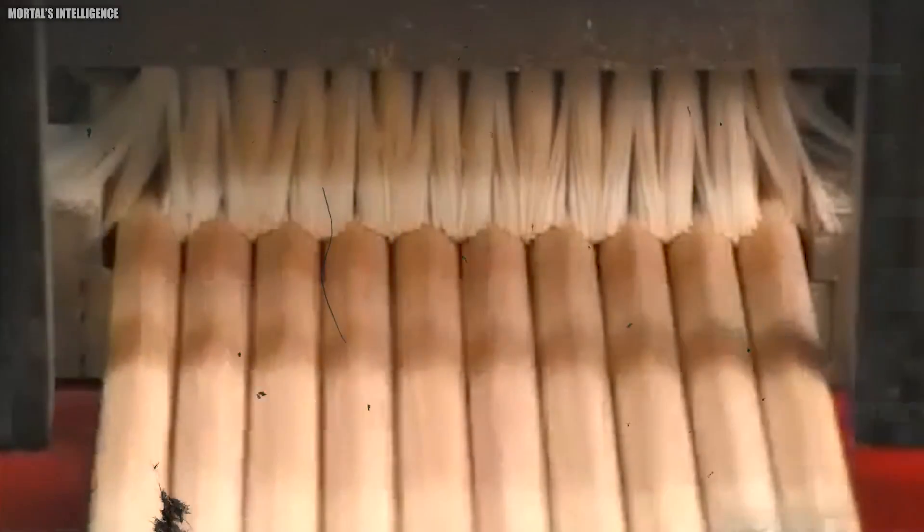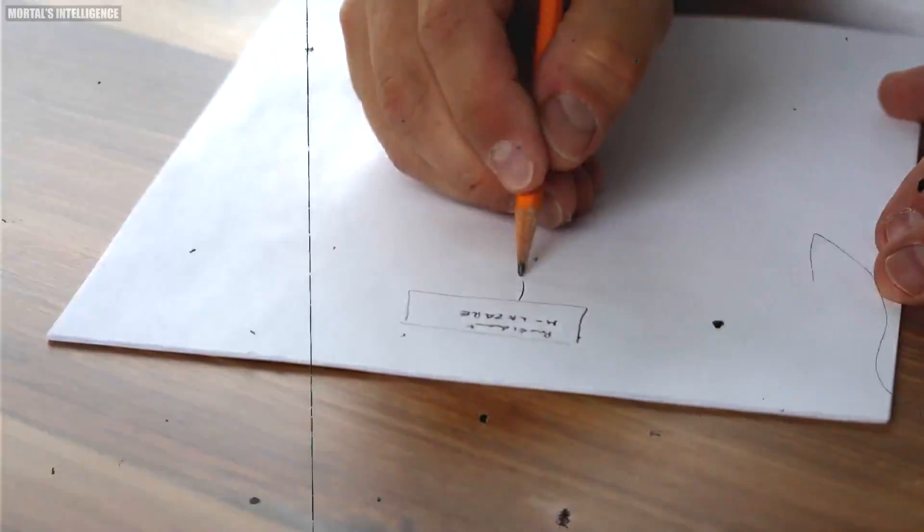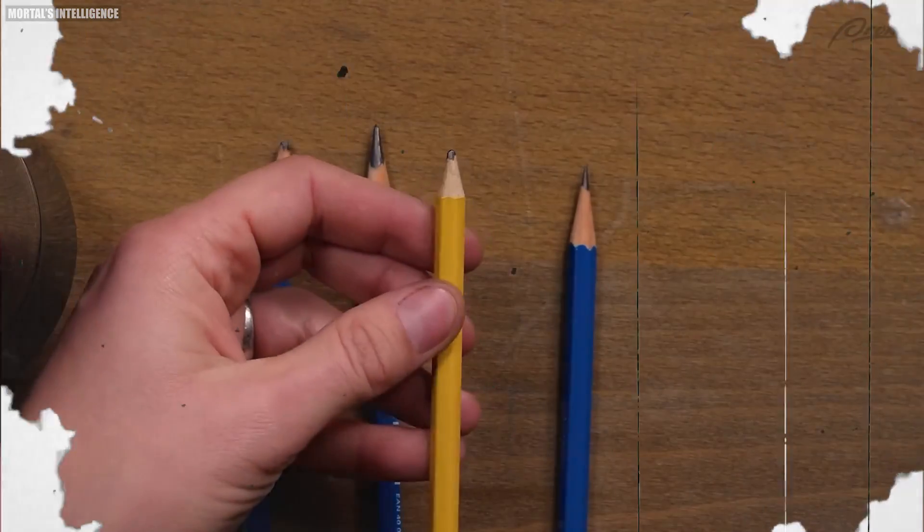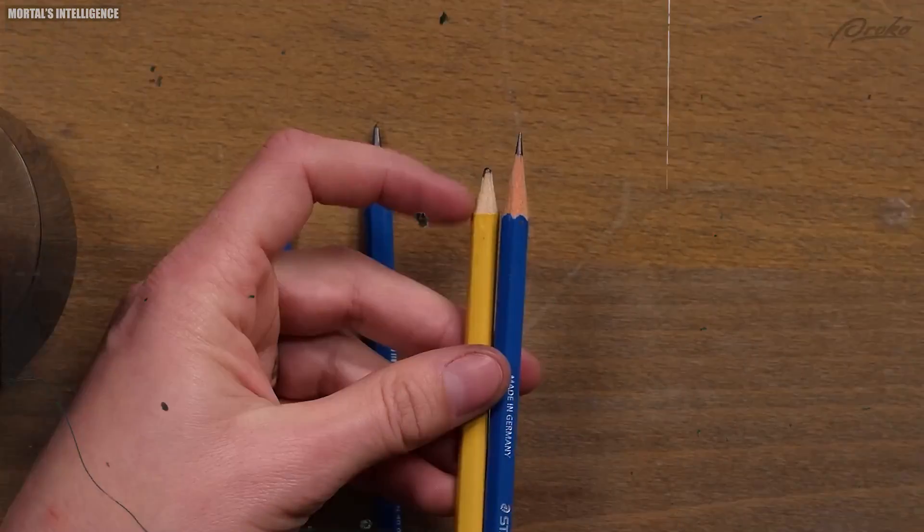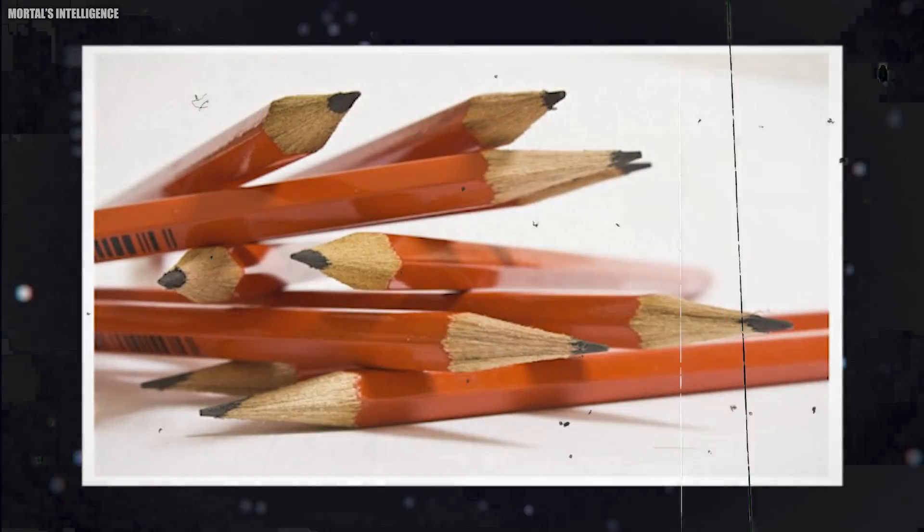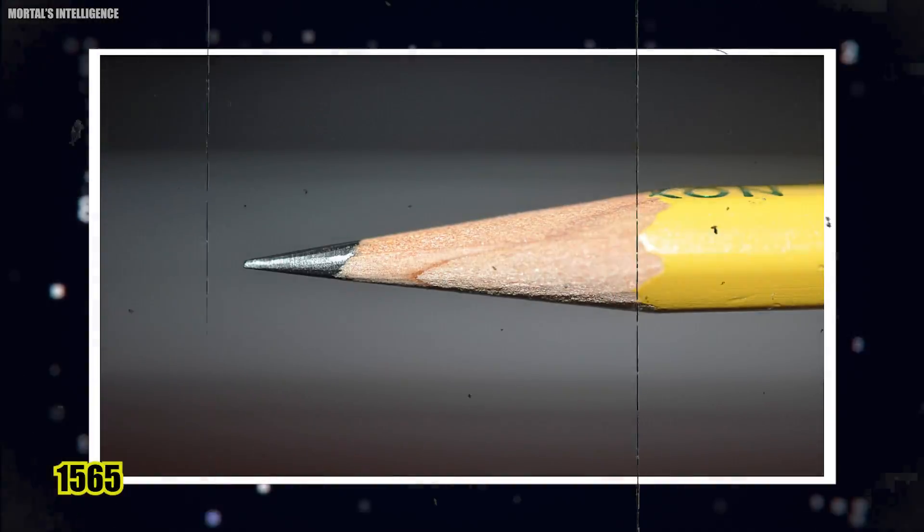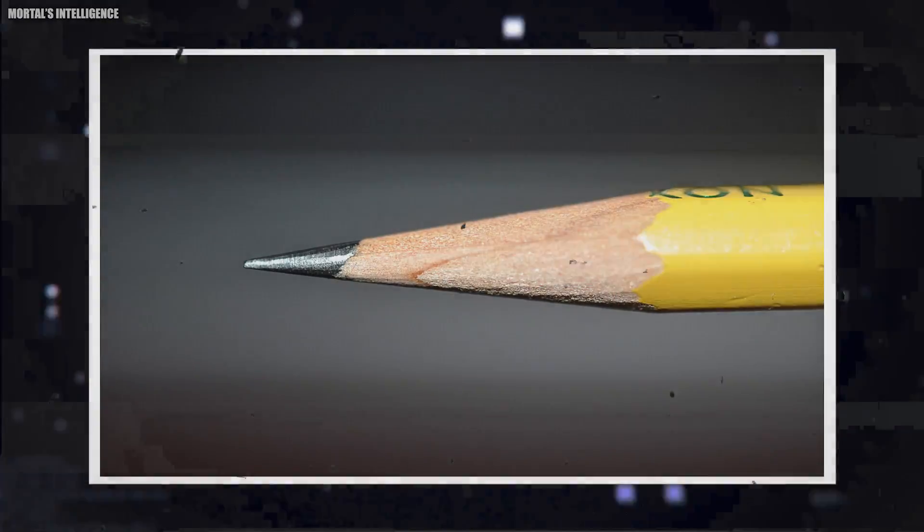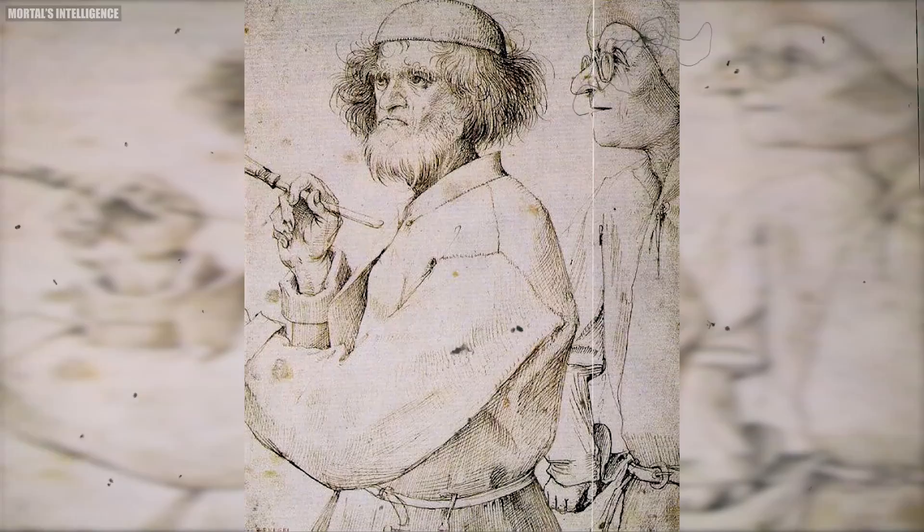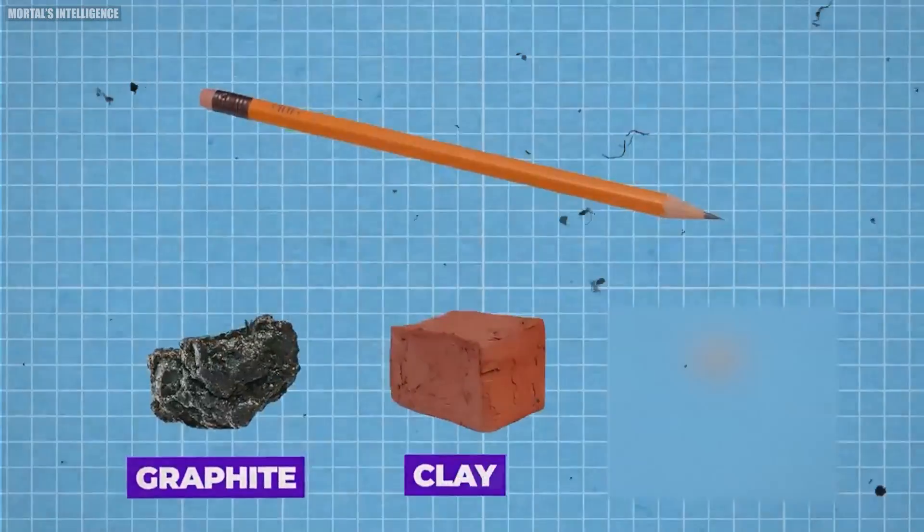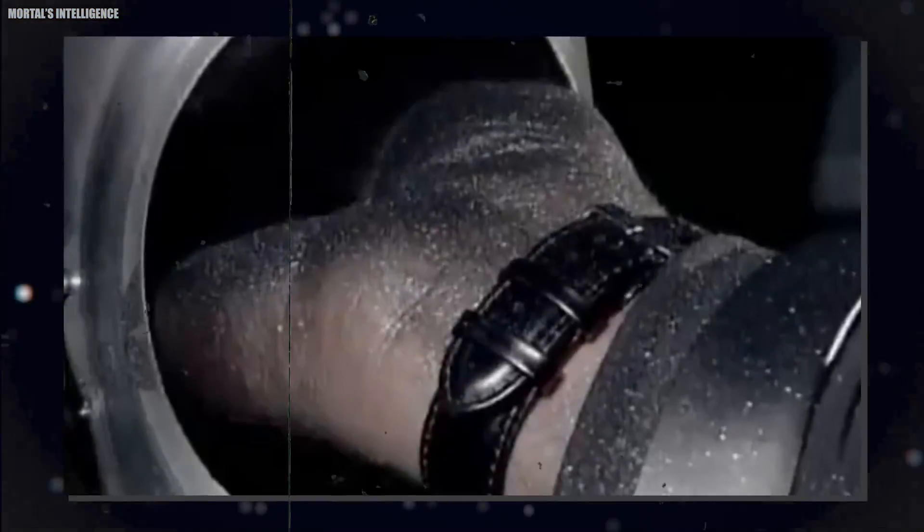The origins of the pencil can be traced back to ancient civilizations where people used sharpened pieces of lead to mark surfaces. However, it wasn't until the 16th century that the modern pencil as we know it began to take shape. In 1565, an Italian couple, Simonio and Lindiana Bernacotti, patented a process for making pencils using a mixture of graphite and clay. This breakthrough paved the way for mass production.